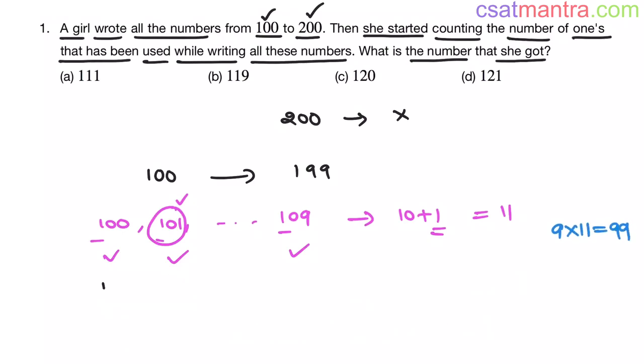Now from 110 up to 119, these 10 numbers we have missed. So every number has 2 ones. 10 numbers, so 2 into 10, that is 20. Now this triple 1 has one extra, so I am writing that 1 also. Now this is 21. So total number of 1s will be 99 plus 21, that is 120.